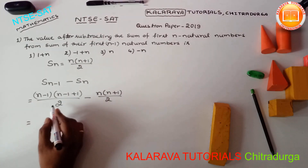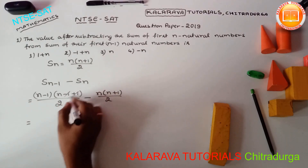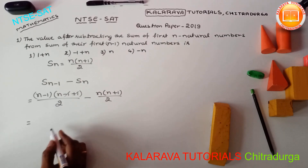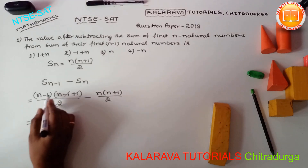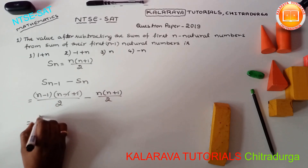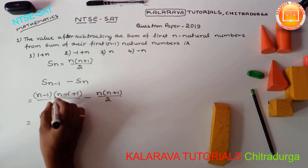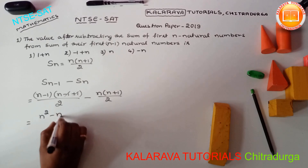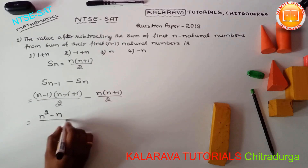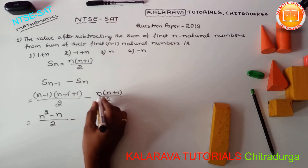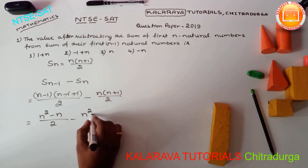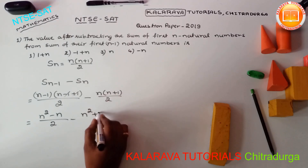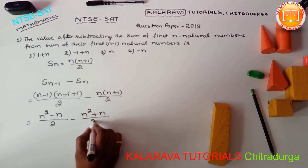Substituting these values, the N and (N-1+1) terms cancel, leaving N. Multiplying out: N(N-1) gives N squared minus N, divided by 2, minus N(N+1), which gives N squared plus N, divided by 2.